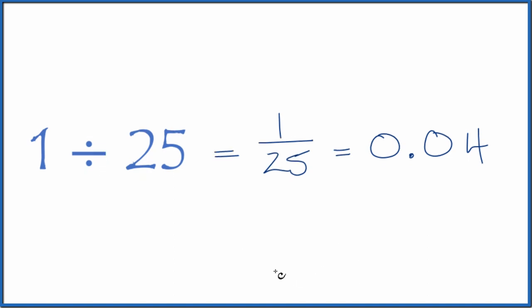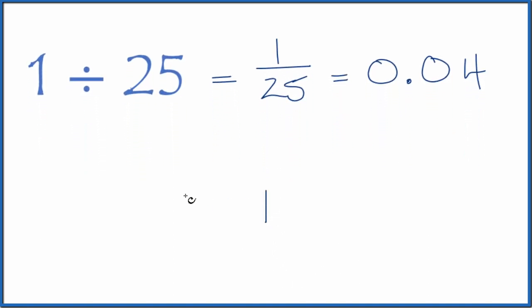You can also do this longhand. You could say 1 and see how many times 25 goes into 1. It doesn't go into 1, but we could call this 10 if we put a zero with a decimal point here. It still doesn't go into 10. Let's call it 100 and add another zero after the decimal point.